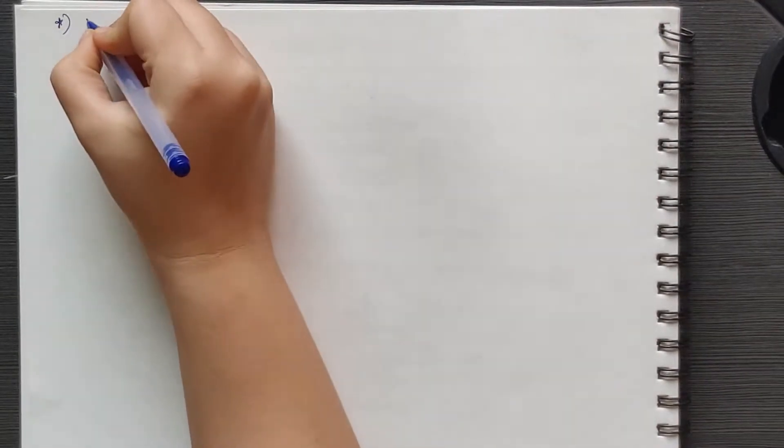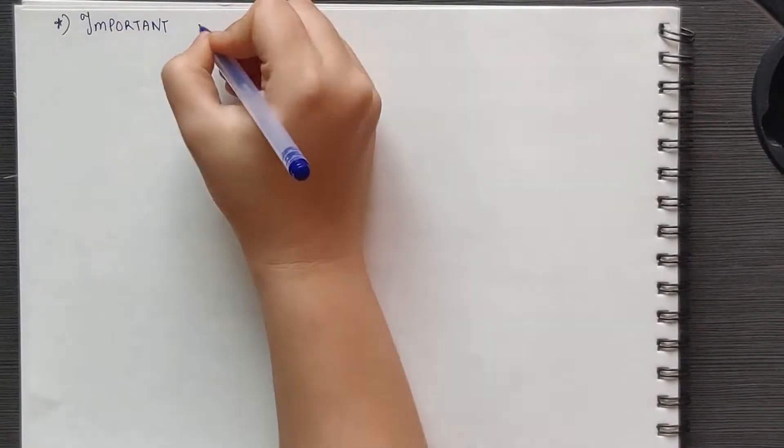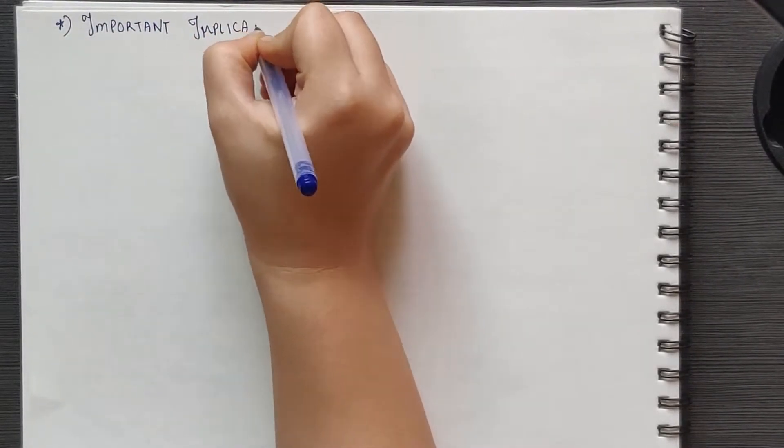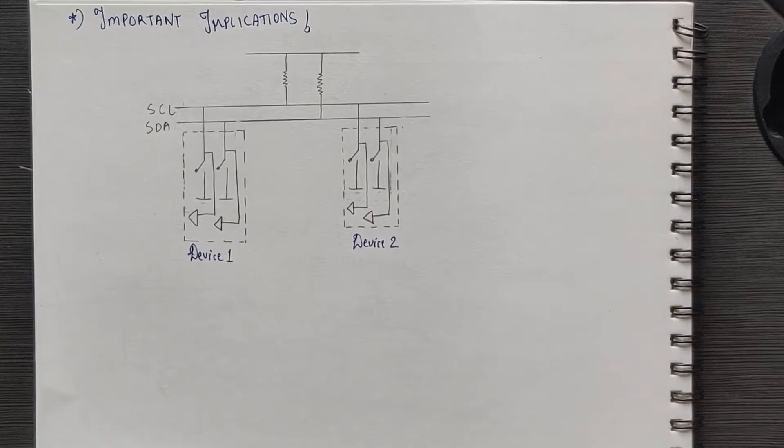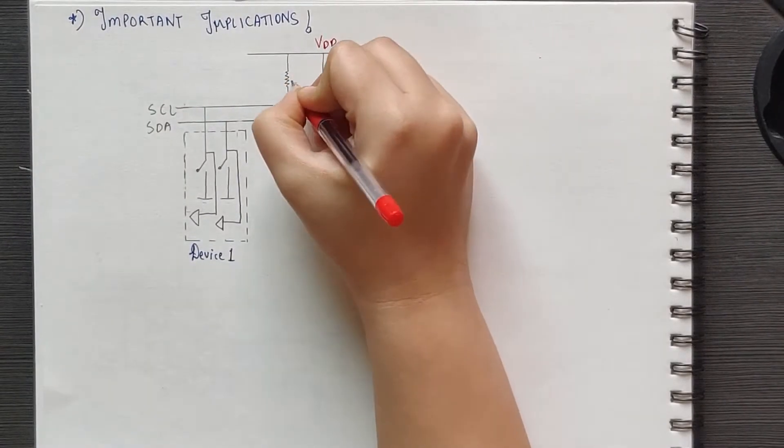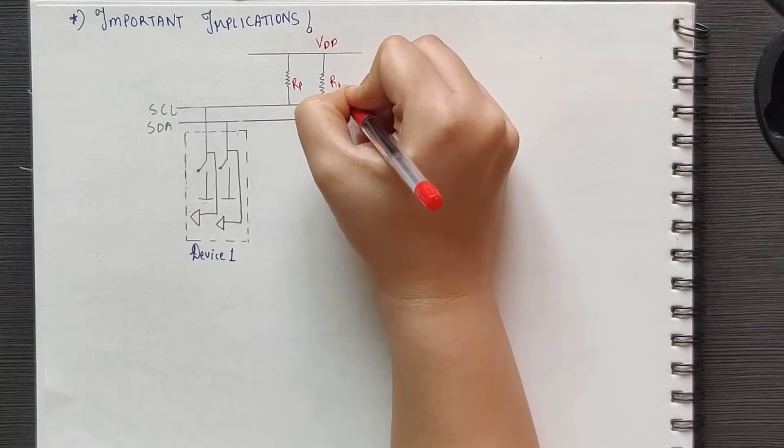Now there are some important implications of open drain configuration and we look at each one of these one by one. So the first implication is that the bus line is at logic high or 1 by default due to the pull-up resistor.